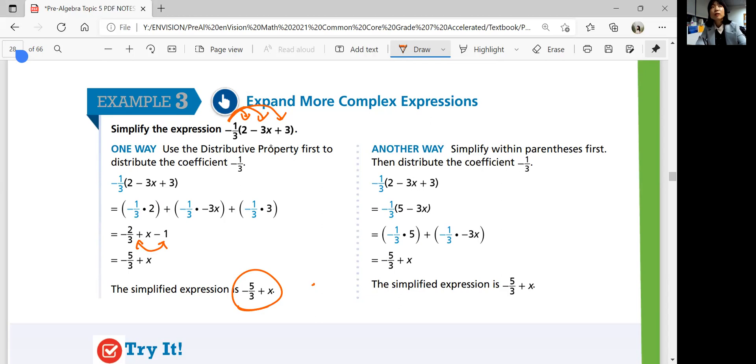Or you can simplify inside first, 2 plus 3 is 5. And then you can use distributive property after that. And then it makes it simpler later when you distribute it. So there are different ways, but you should get the same answer.